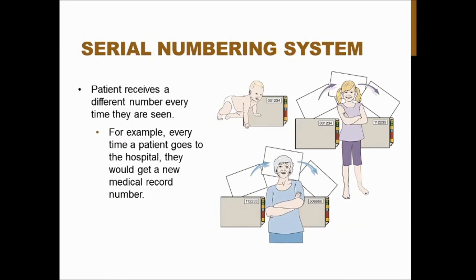The serial numbering system is where a patient receives a different number every time they are seen. Every time they go to the hospital, they receive a different medical record number, potentially accumulating as many numbers as visits. This can be really confusing when looking at a patient's medical records and makes it easy to miss something.